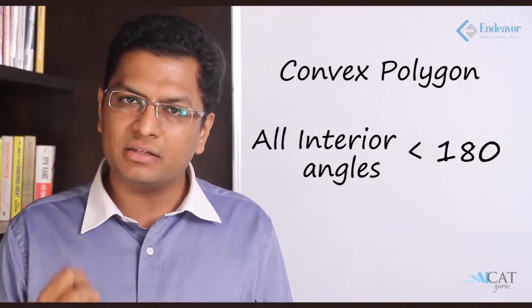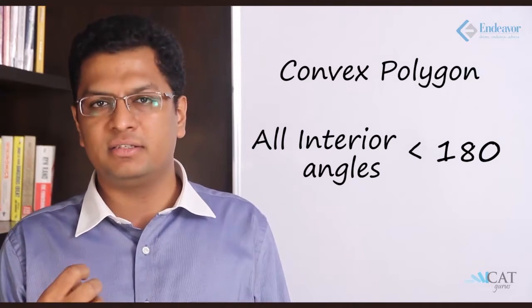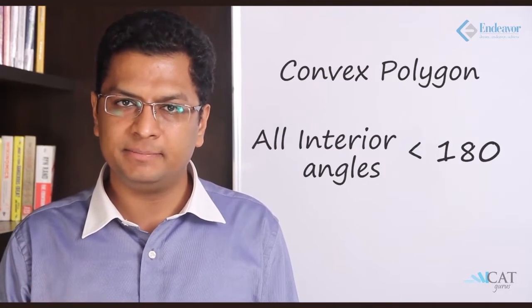Let's have a look at the types of polygons. There is something called a convex polygon, where all the interior angles of the polygon are less than 180 degrees. Normally, in a triangle, the sum of the three angles is 180 degrees, so none of them can be more than 180. So a triangle is a convex polygon.